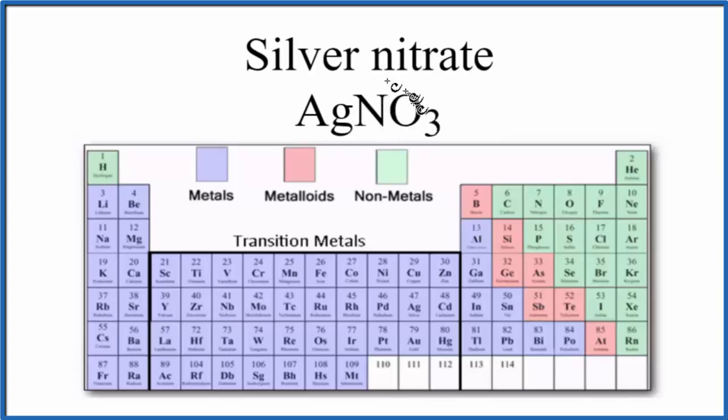The short answer is that AgNO3 is an ionic compound, but within the silver nitrate, we have this nitrate ion, and the bond between the nitrogen and the oxygen atoms, that is a covalent bond.